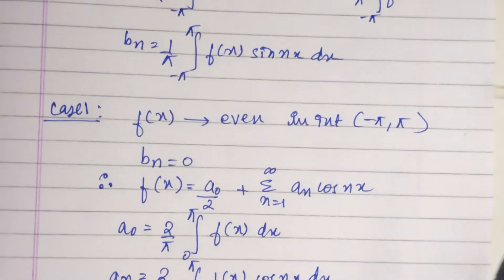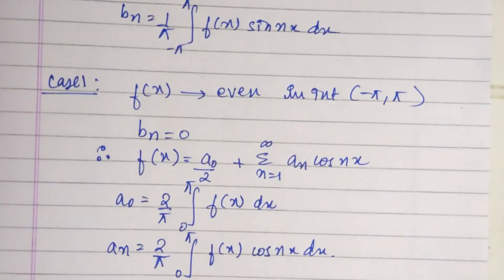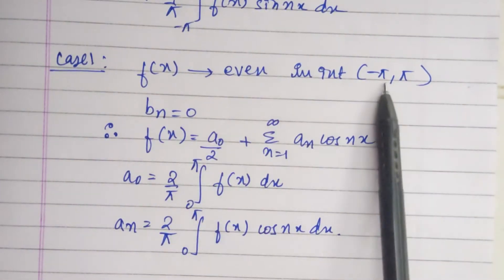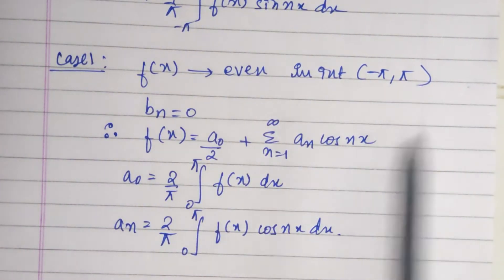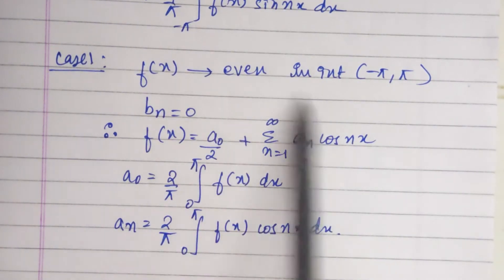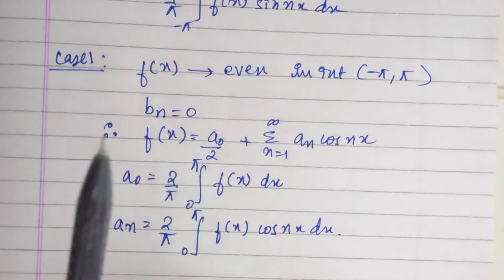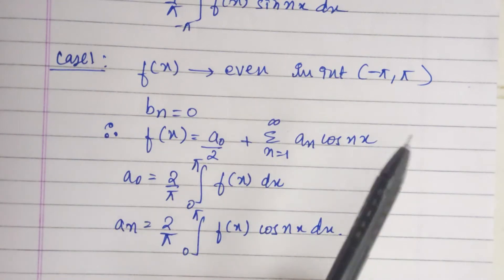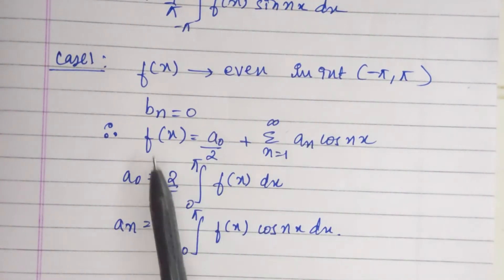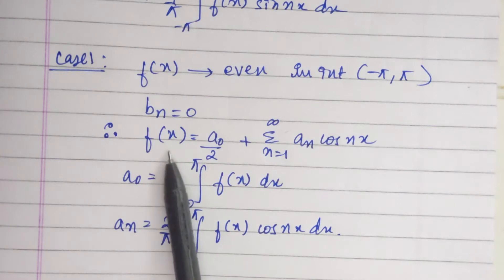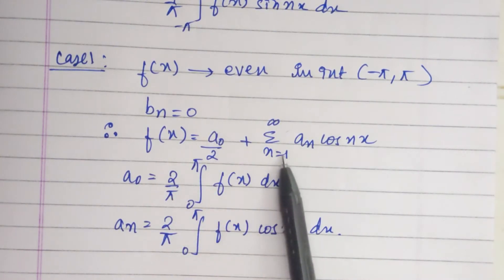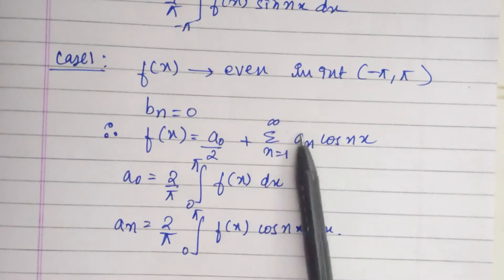Case 1: When the function f of x is even in the interval minus pi to pi, then b n equals 0. When we substitute, it is a standard result — b n will come out to be 0. So f of x will be a naught by 2 plus summation from n equals 1 to infinity of a n cos nx.